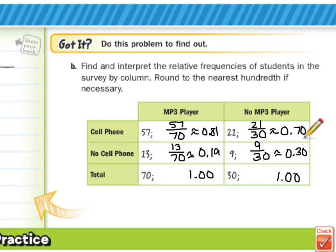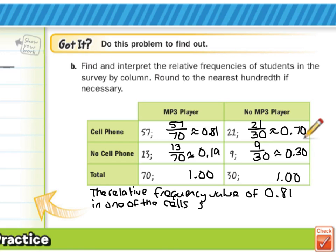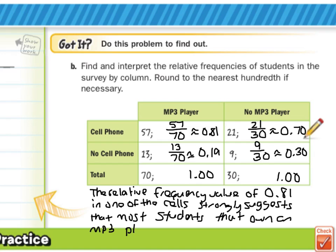So as we try now to interpret this we want to look for a relative frequency that's high or low but let's look for the high one and that's right here at 81 hundredths. So what we can say is that the relative frequency value of 0.81 or 81 hundredths in one of the cells strongly suggests that most students that own an MP3 player also own a cell phone.